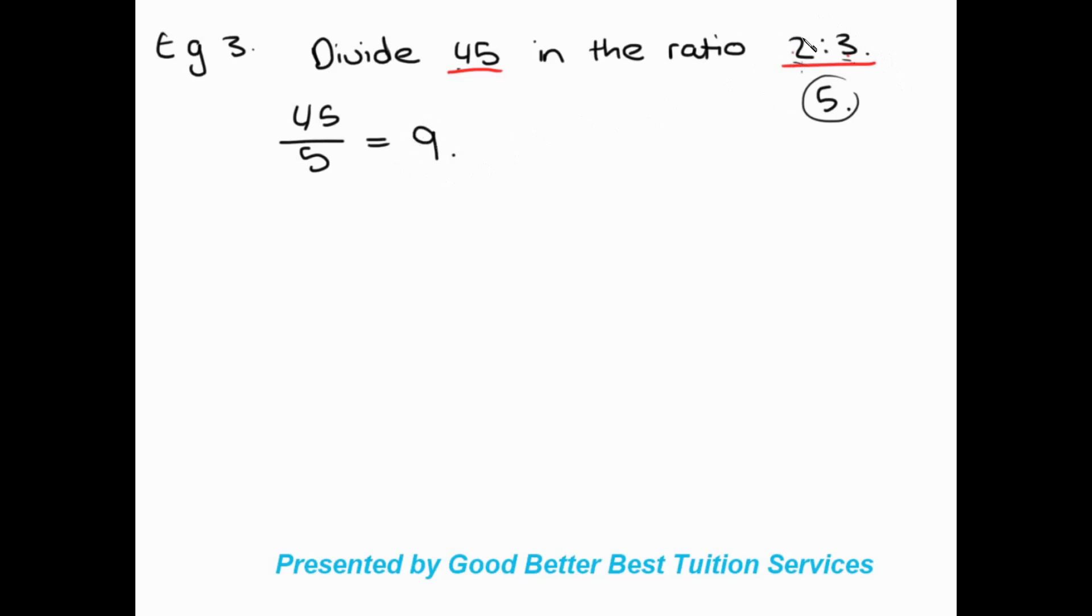But remember, this is two ratio units over here, and this is three ratio units. We're trying to divide 45 into this ratio. What we're going to do is we know that this is one ratio unit. So we need to get it to 2 and then to 3. We're going to say 9 times 2 first for the one side and then 9 times 3. Once we do that, we get that by dividing 45 in the ratio 2 is to 3, we get 18 is to 27. And that's how we successfully divide 45 in the ratio 2 is to 3.